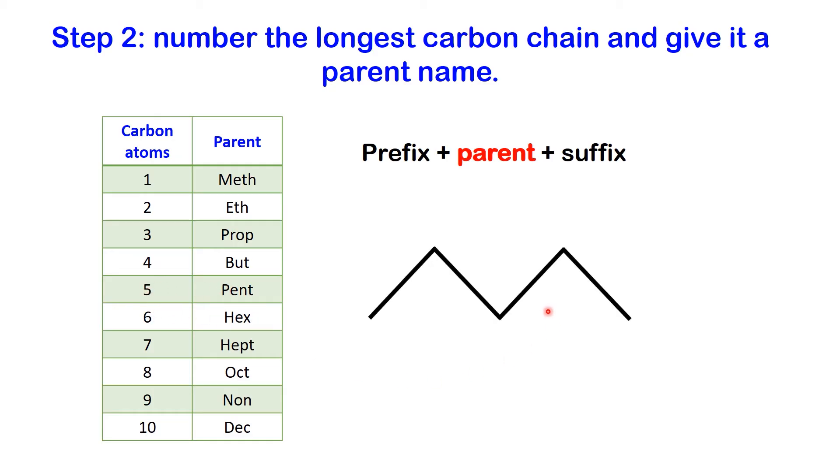Let's explore some examples. In this molecule there are five carbon atoms and the parent name is pent. Since we are naming alkanes, every structure name will end with -ane, therefore the alkane name for this structure is pentane.